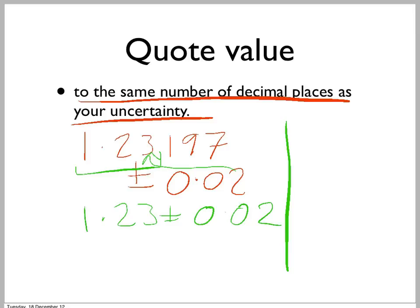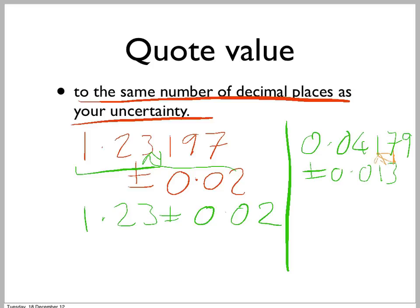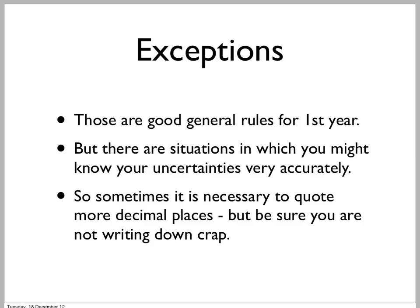Another example: let's say you had 0.04179 plus or minus 0.013. Notice you're quoting this to two significant figures because it starts with a 1 — the first significant figure is a 1. General rule: if you follow this rule, it will stop you quoting meaningless figures.